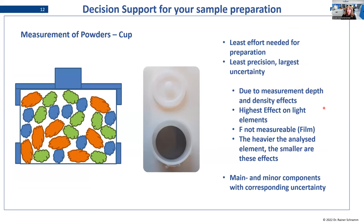The easiest way to prepare your powder is in a cup. This takes the least effort but also gives the least precision and the largest uncertainty. On one hand there is the measurement depth effect, and on the other hand there are density effects — especially for voluminous powders, there is a lot of air in between the particles, which also influences the measurement. The highest effect from all of these is on light elements: the lighter the element, the harsher the effect will be.